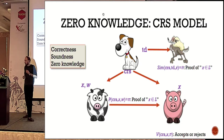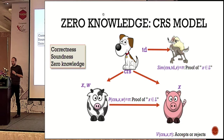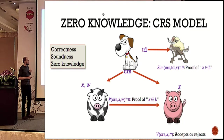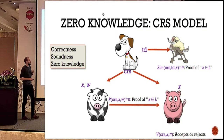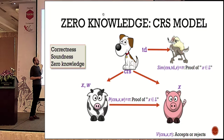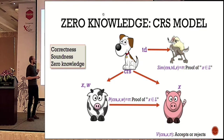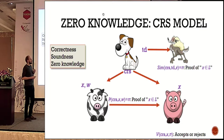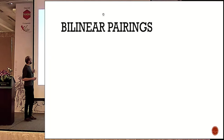Every zero-knowledge argument has three properties: correctness, meaning the verifier accepts if the proof is correct; soundness, meaning it is hard for a malicious prover to make the verifier accept if x does not belong to the language; and zero-knowledge, which is defined by the simulator.